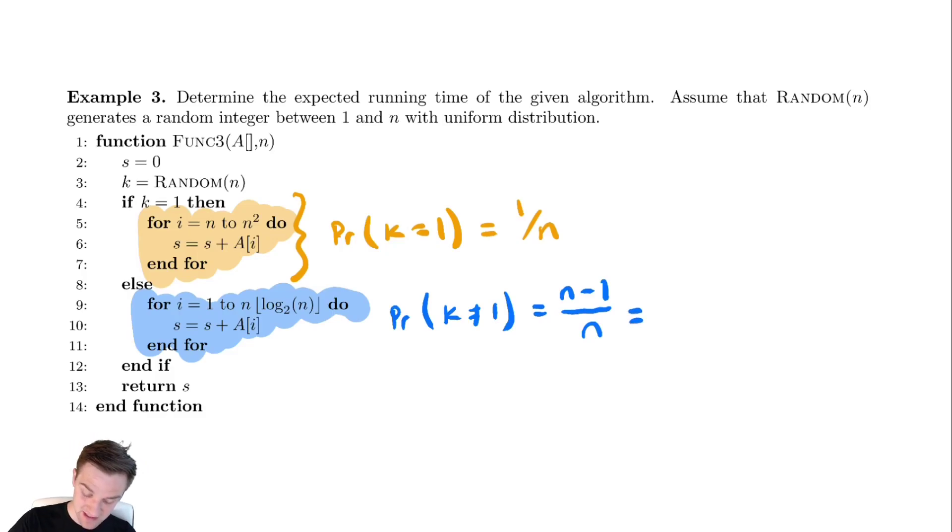You could also compute this as it's the exact opposite of the above statement, it's the probability that k is not equal to one. So it's one minus the above probability. And just to verify, this is n over n minus one over n. Those are the same. So either way is a valid way to compute that value.